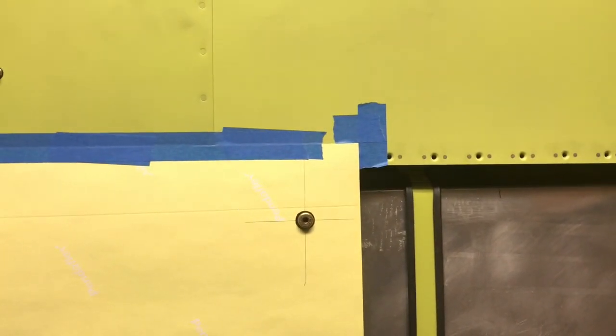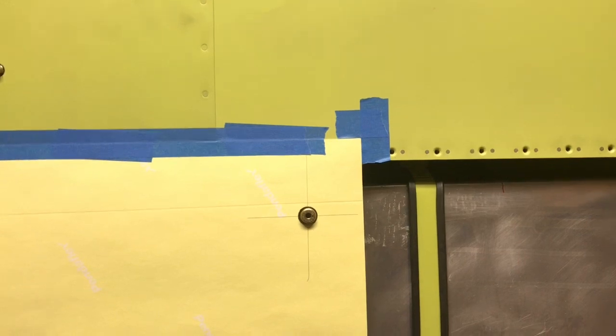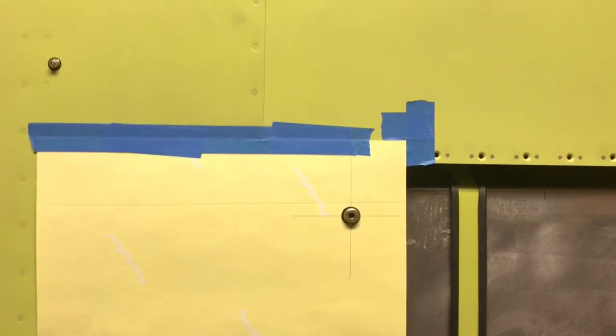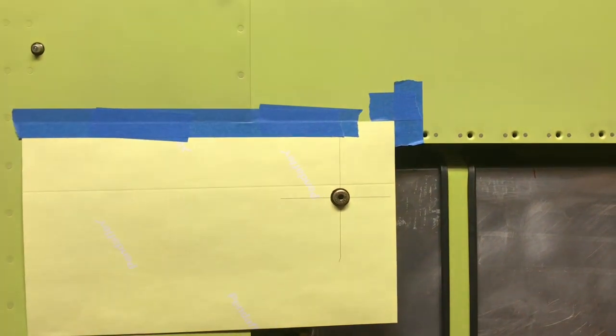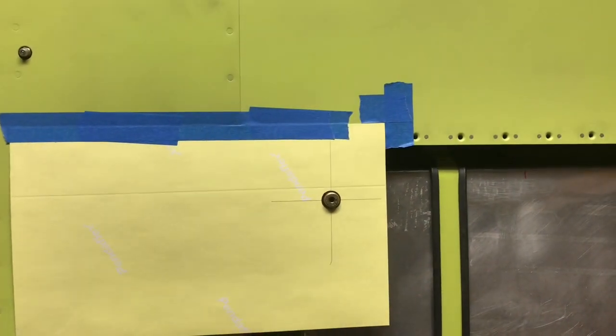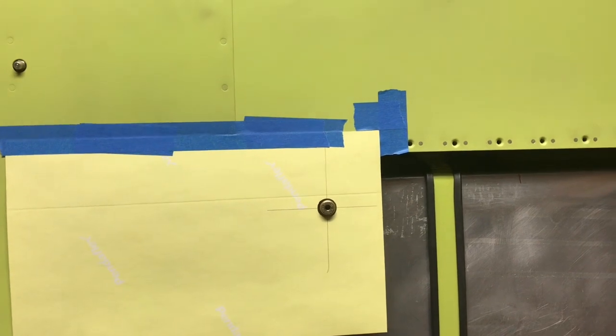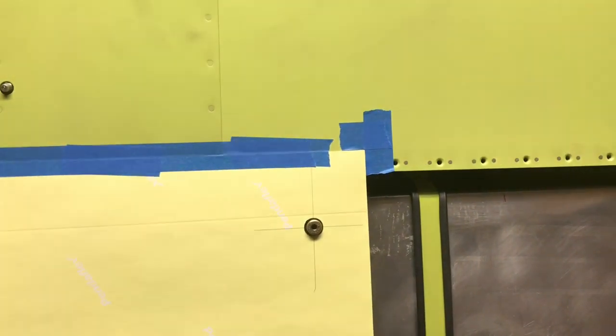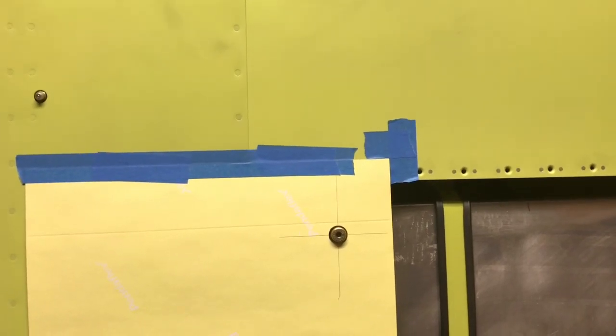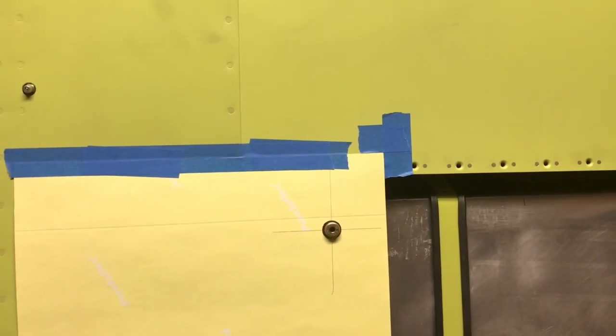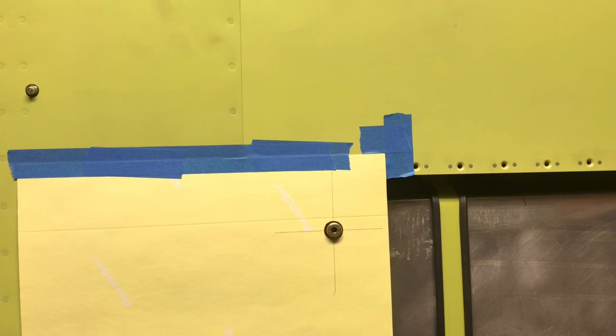But basically what we do is we just locate the hole like this. When I put the hole in the skin, when I use this method, John provided me with a laser cut template, if you will, that the hole in the laser cut template was exactly the diameter of the filler neck.